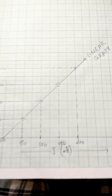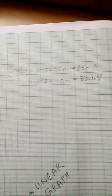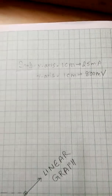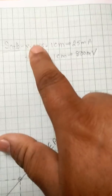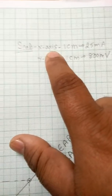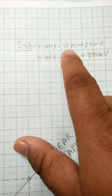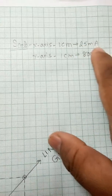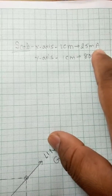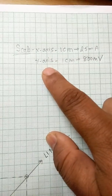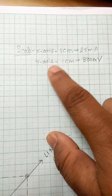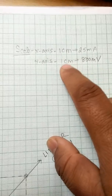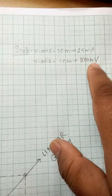What you need to do is first decide the scale. On the X-axis, the scale is: one centimeter equals 25 milliamperes. On the Y-axis I have taken one centimeter as 800 millivolts.